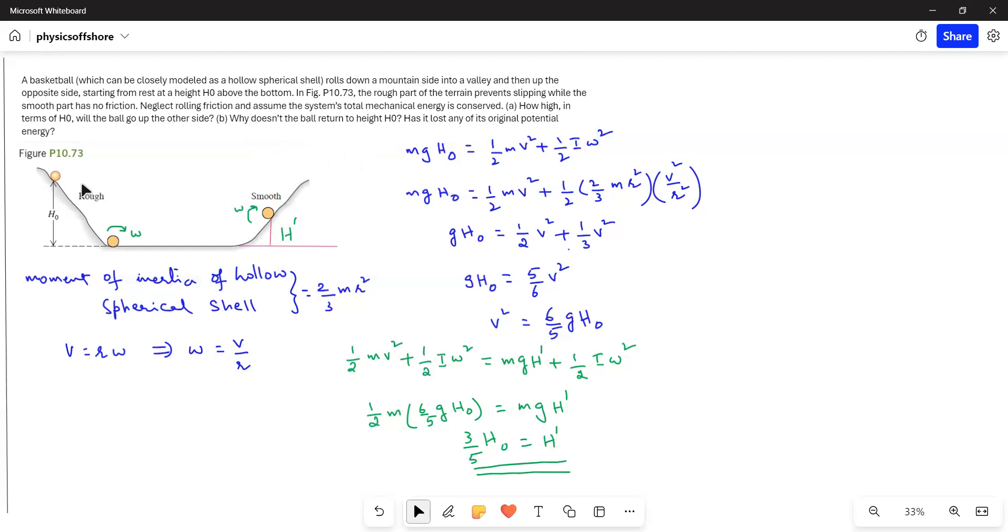Why doesn't it mean here - the initial potential energy gets converted into both translational and rotational kinetic energy. The rotational one will not manifest again. When it is climbing up, it will not come into the account. That is why we get lesser height while climbing up on the smooth side. That's the answer for this question.